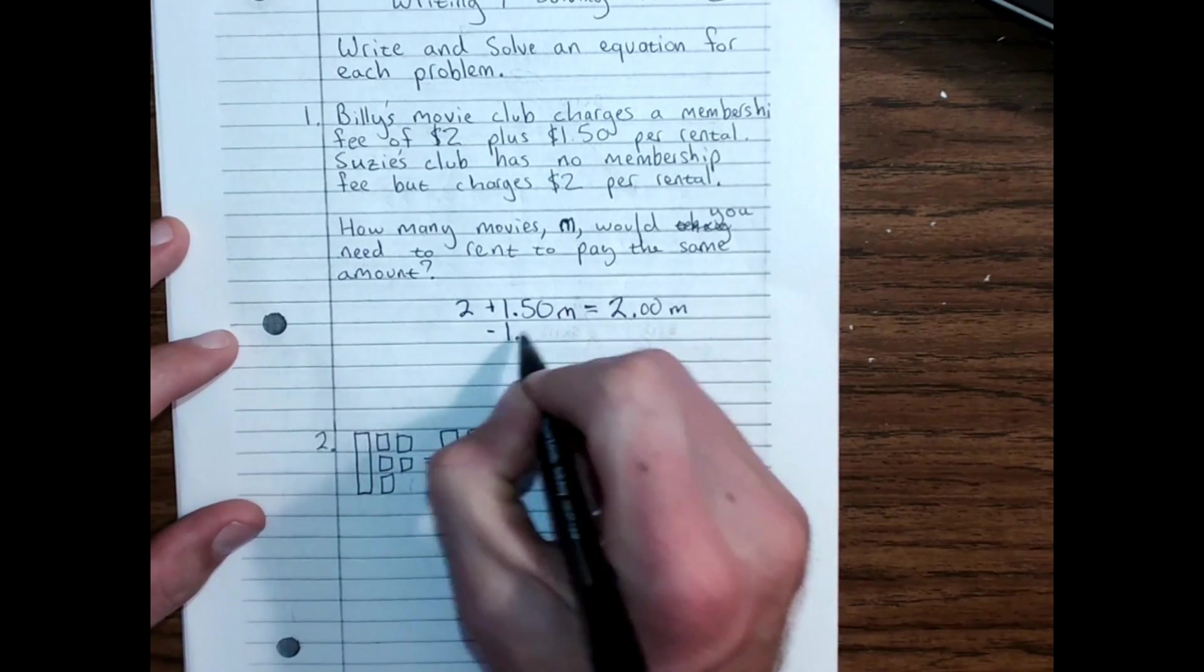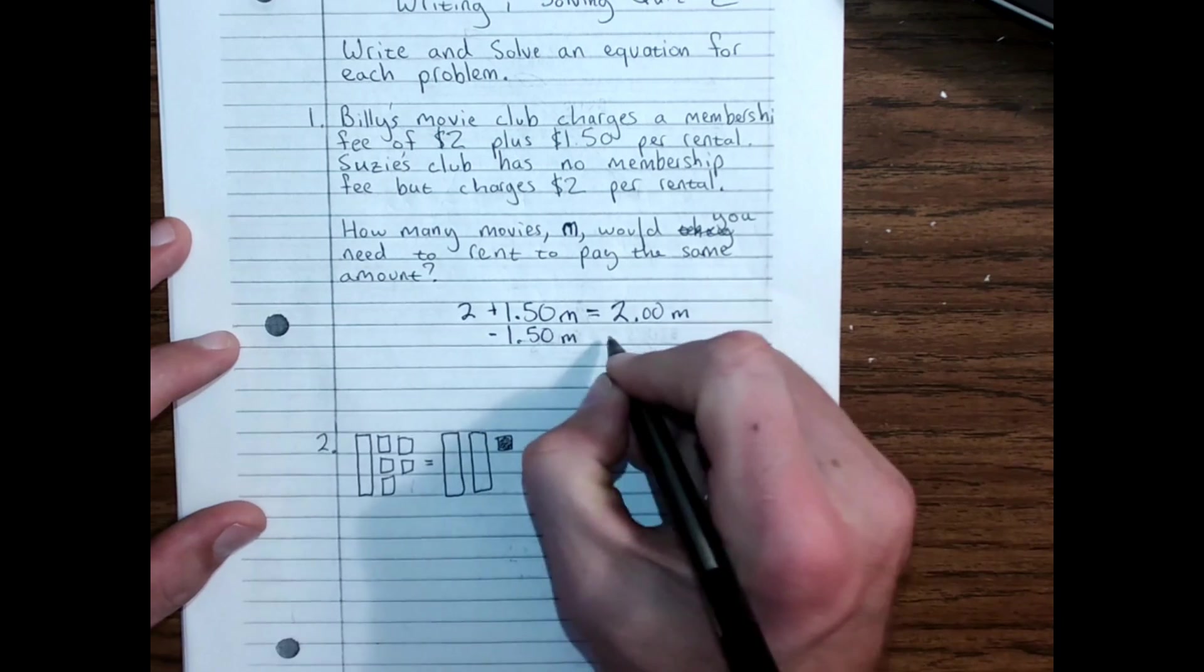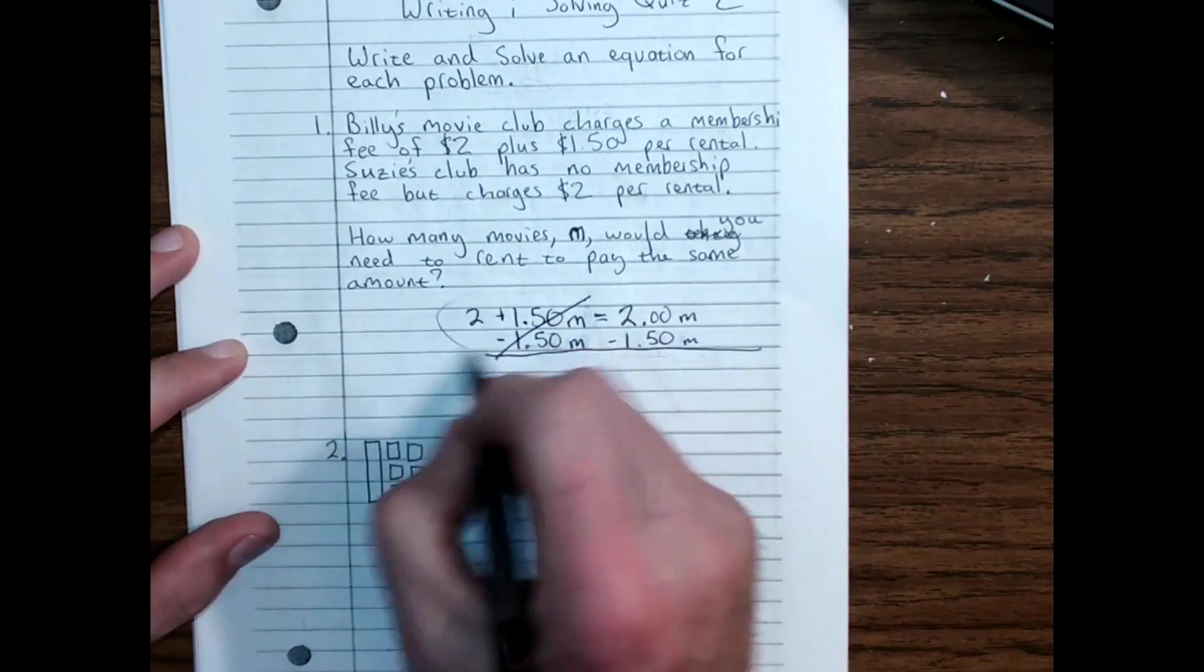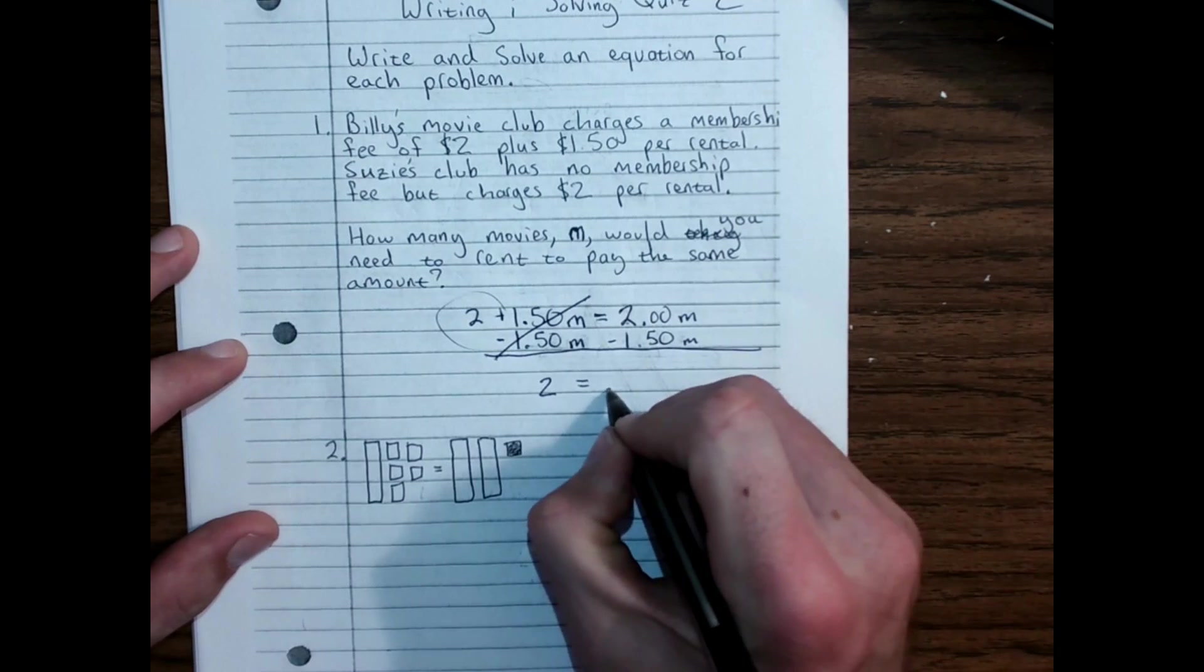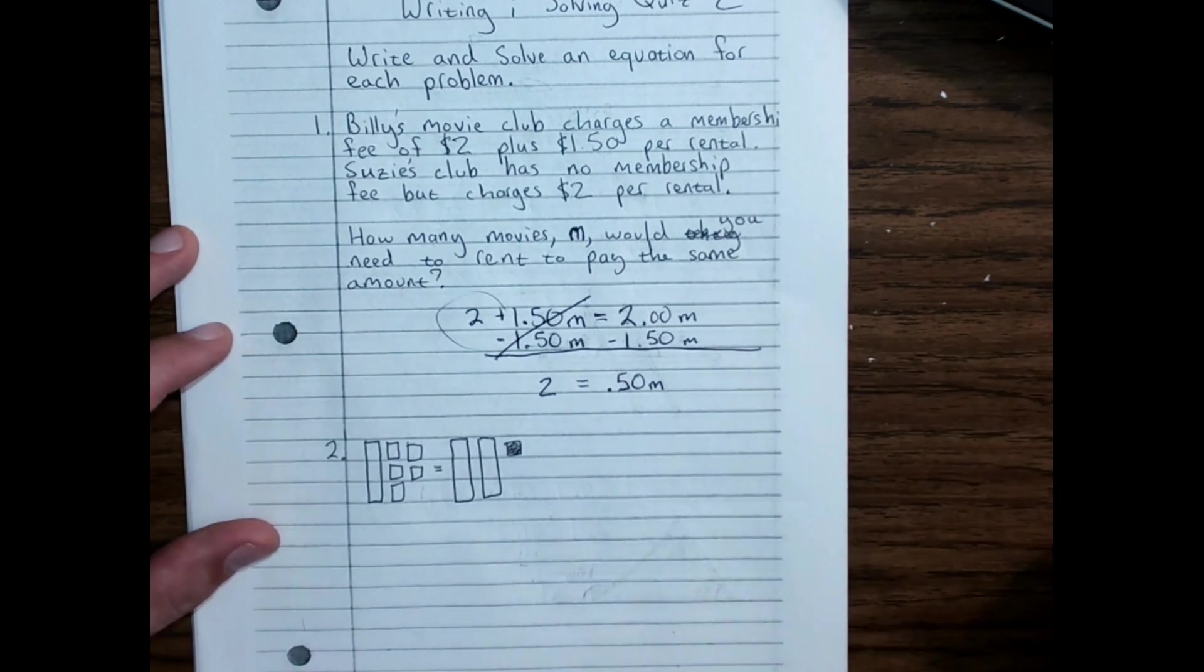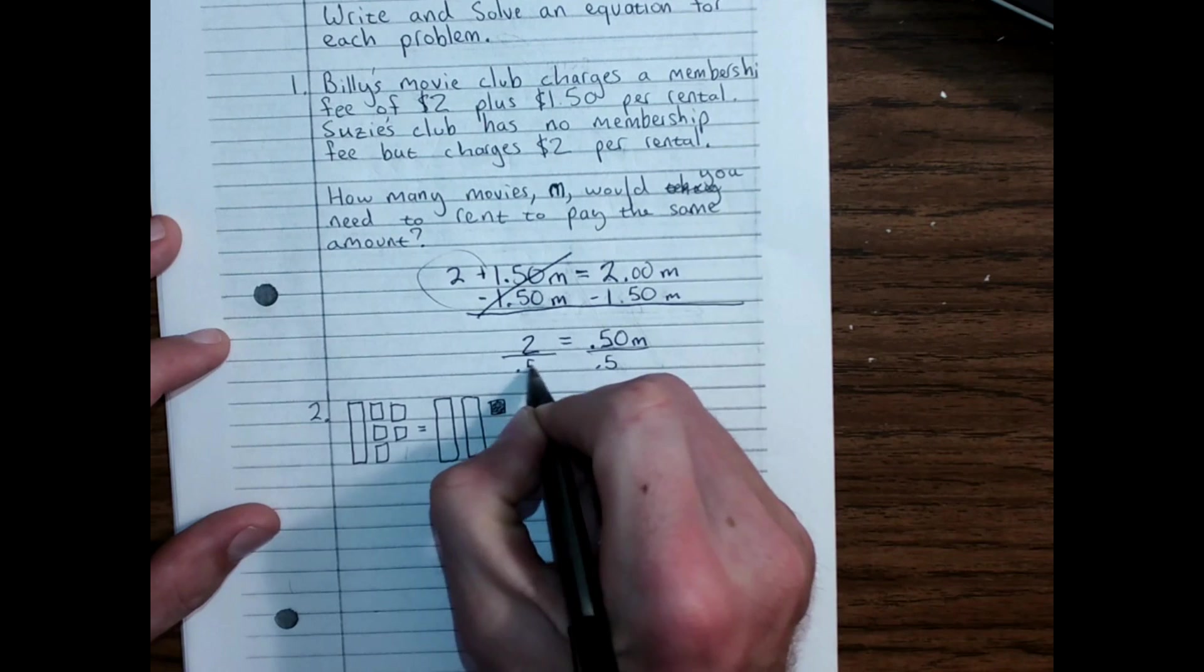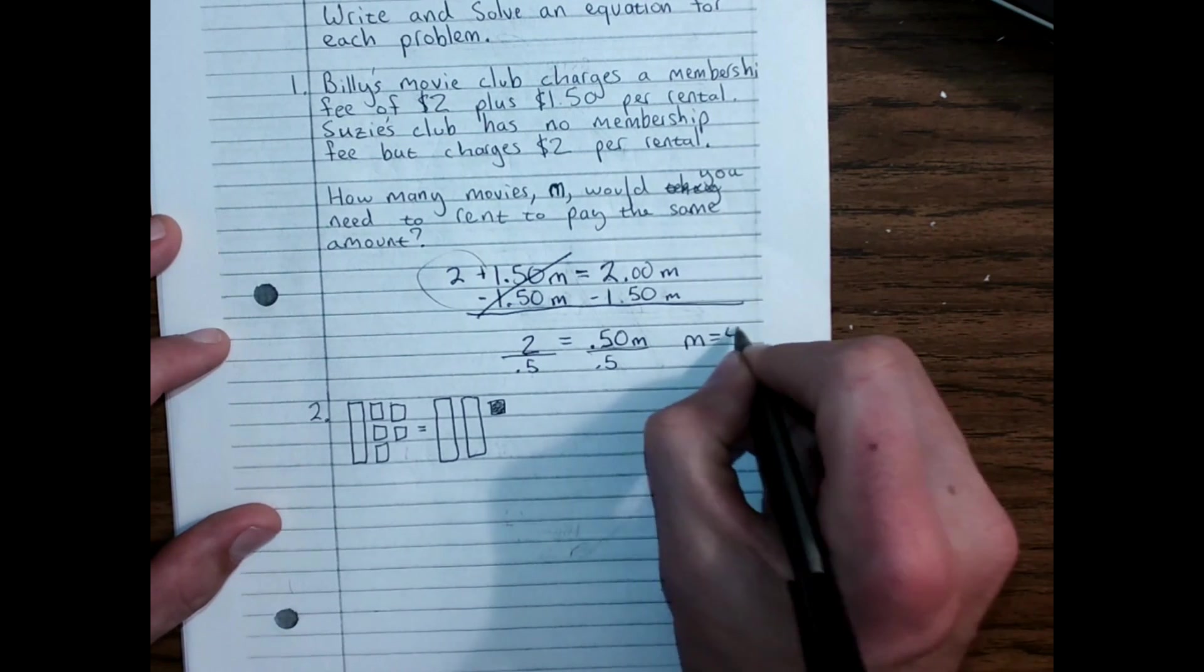Should be equal to the other club that has no membership fee, but they charge $2 per rental. So just like before, I cancel off the smaller of the two variable terms first. Zero pair. All that's left is the two equals $2 minus $1.50 is .50M. And then divide both sides by 0.5. 0.5 goes into 2 four times, so M equals 4.